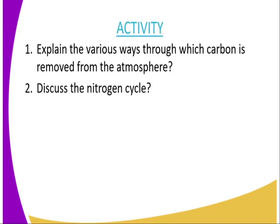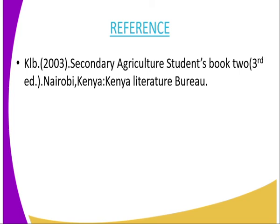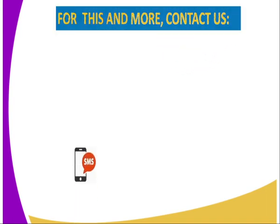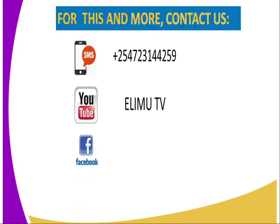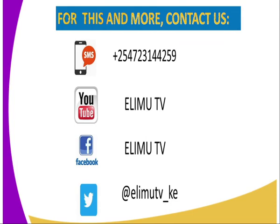That is the end of today's lesson. Your assignment: question one, explain the various ways through which carbon is removed from the atmosphere; question two, discuss the nitrogen cycle as already covered. For reference, you can refer to the secondary agriculture student book 2. For more information, you can reach us via SMS, YouTube at Elimu TV, Facebook at Elimu TV, or Twitter at Elimu_KE. Thank you for joining me in my lesson. May God bless you.